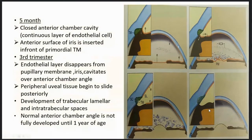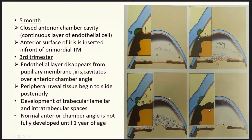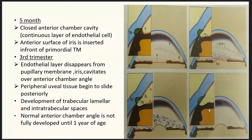At the fifth month, the closed anterior chamber cavity is formed, continuously lined by an endothelial cell layer. At this stage, the anterior surface of the iris is inserted in front of the primordial trabecular meshwork. In the third trimester, the endothelial cell layers start disappearing from the pupillary membrane and the iris, opening the anterior chamber angle. The peripheral uveal tissue begins to slide posteriorly, and the development of trabecular lamellae and intertrabecular spaces occurs from the innermost part of the primordial trabecular meshwork toward Schlemm's canal. The normal anterior chamber angle is not fully developed until one year of age. Any deviation from normal angle development results in childhood glaucoma.